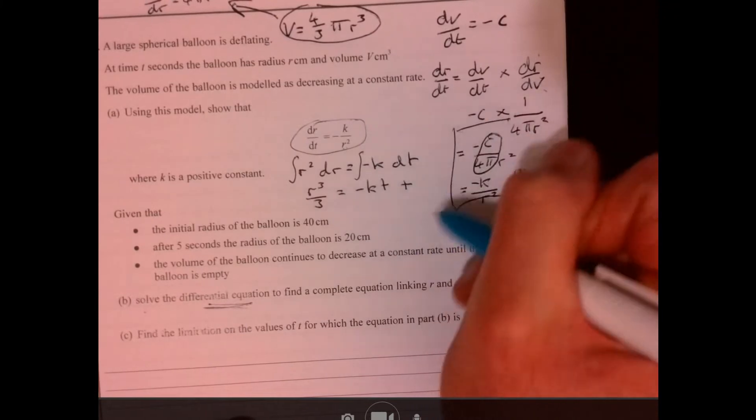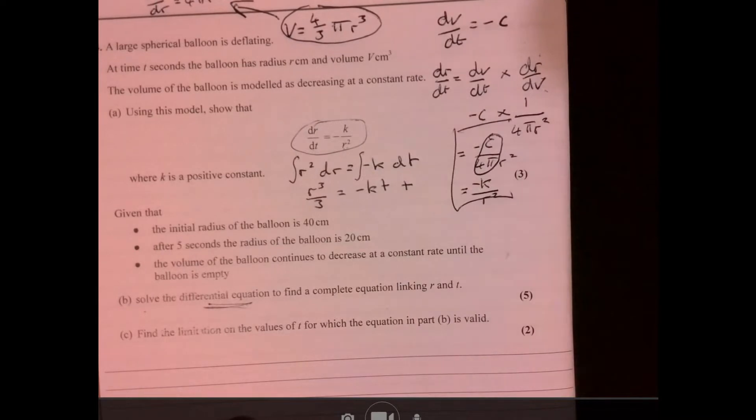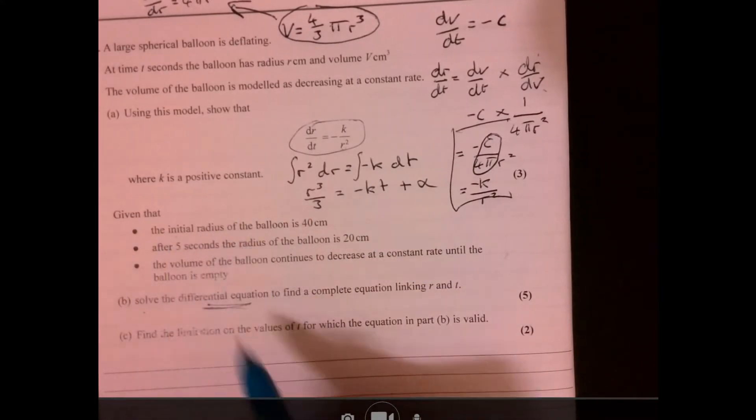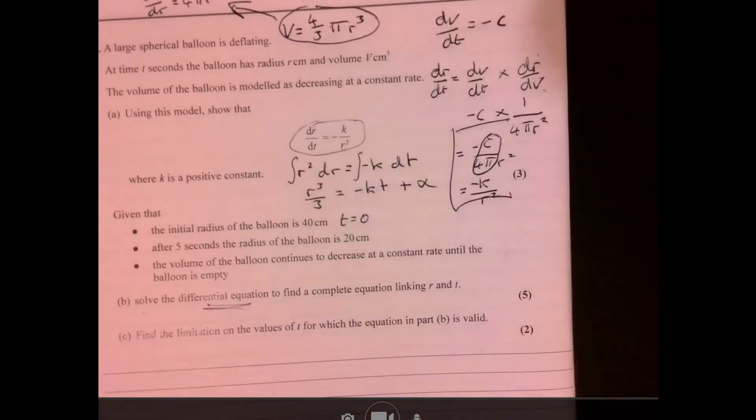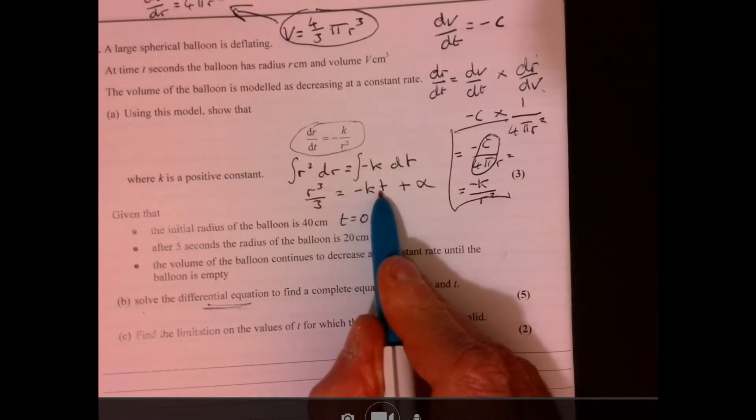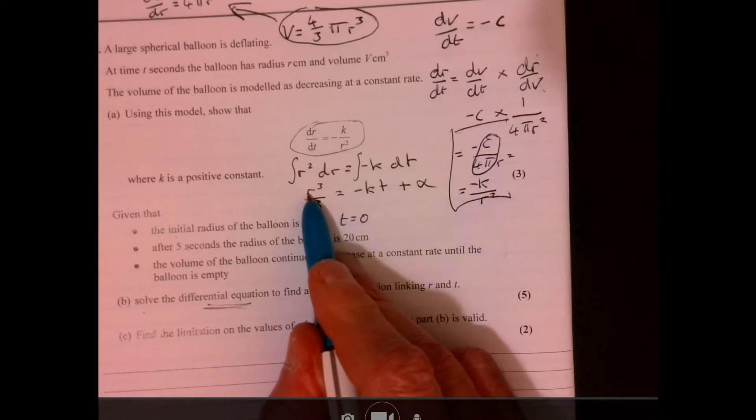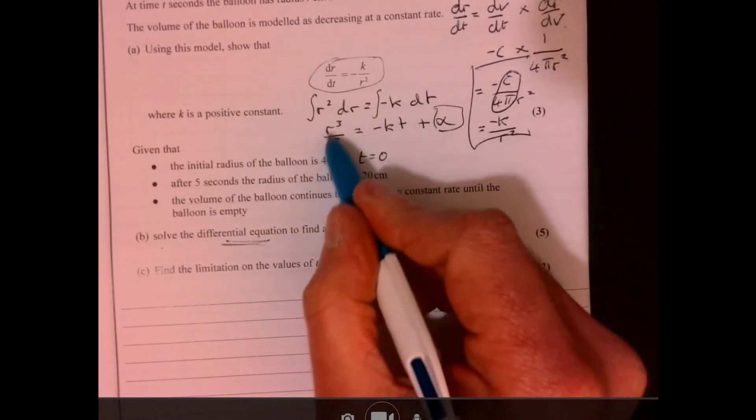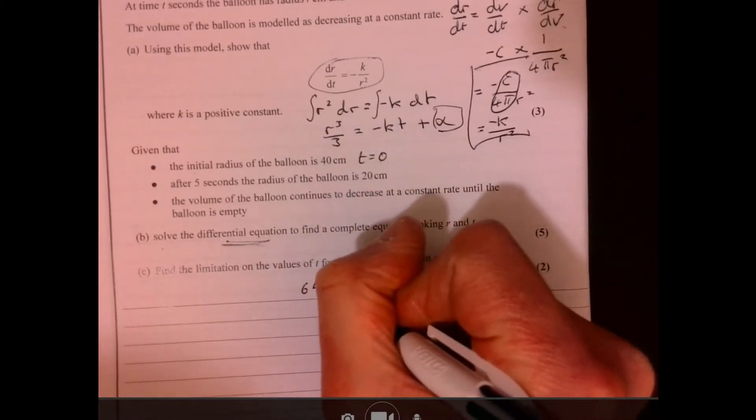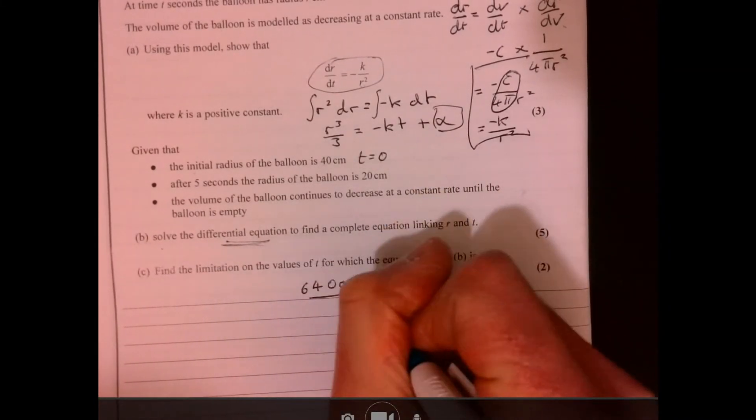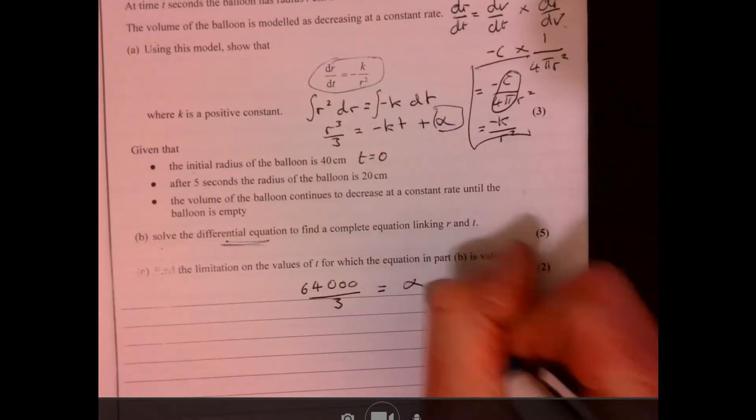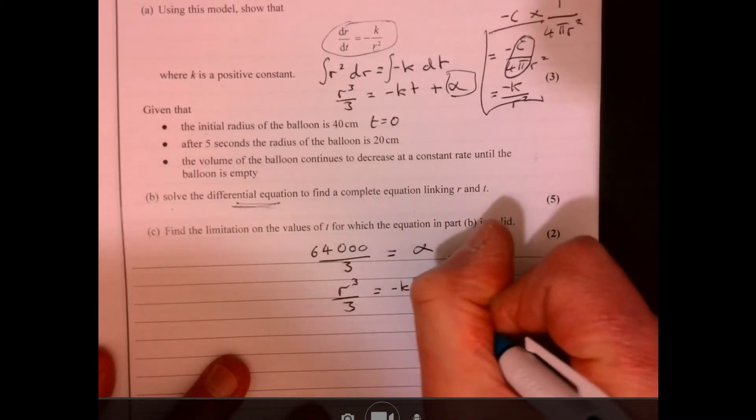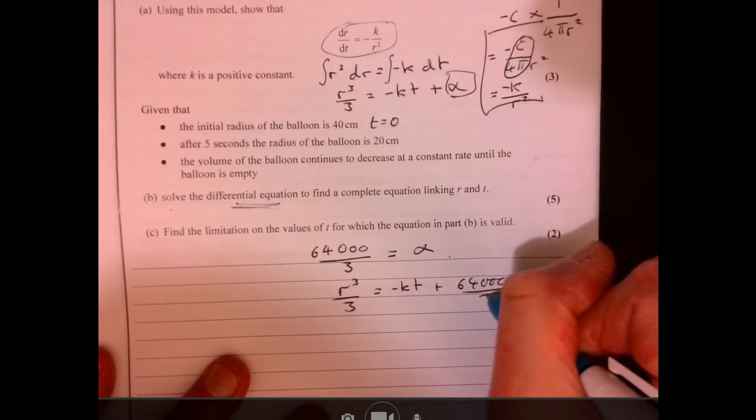I'm just going to get that over there. So let's just call it a different letter, something that we haven't used. Normally I put plus c there, but we've already used a c, haven't we? So you just call it anything you like. What do we know? The initial radius. So in other words, when t is equal to 0. So all I need to do is plug in t equals 0 and the radius is 40, it gives me what that figure is. 40 cubed will give us 64 and 3 zeros over 3. So that's this figure just here. So let's write down what we've got now. We've got r cubed over 3 equals minus k t plus this number there.